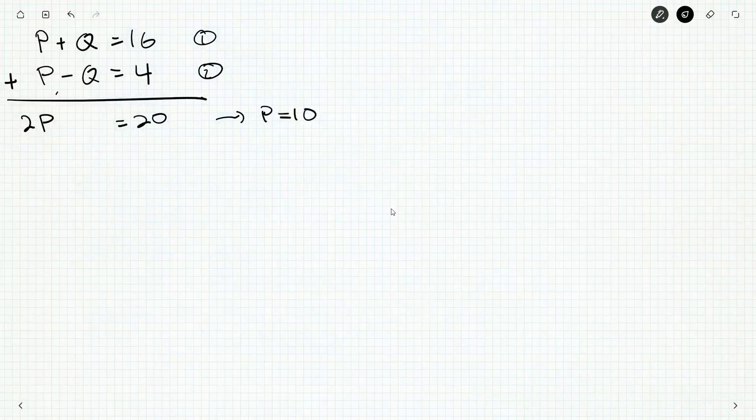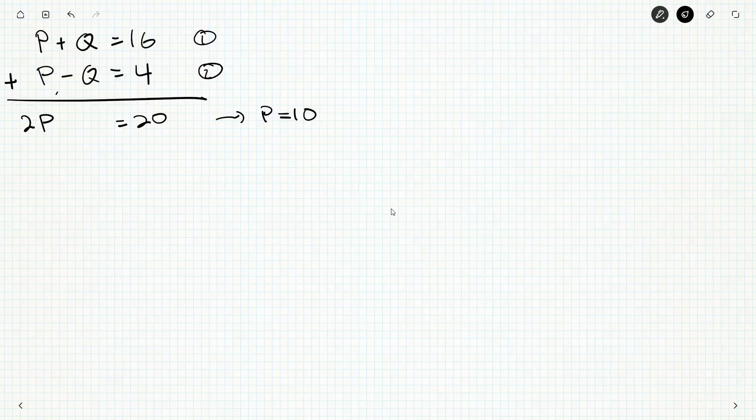So I'd like to get a single equation just in terms of P or just in terms of Q. If I know what P is, I know what Q is. If I know what Q is, I know what P is. Okay, so if I knew, for example, that Q was 8, the first equation tells me P plus 8 is 16. P is going to have to be 8, that sort of thing.